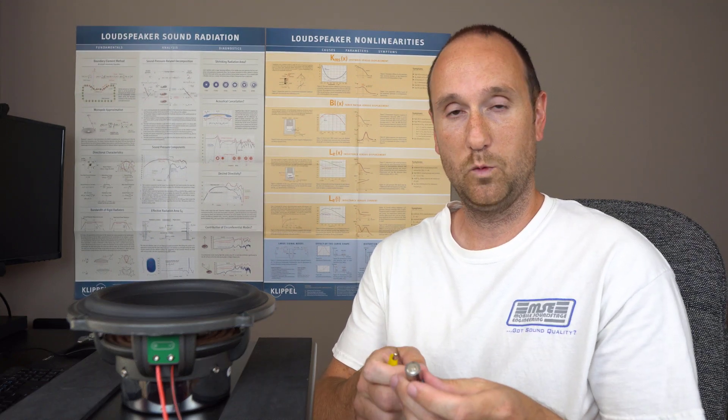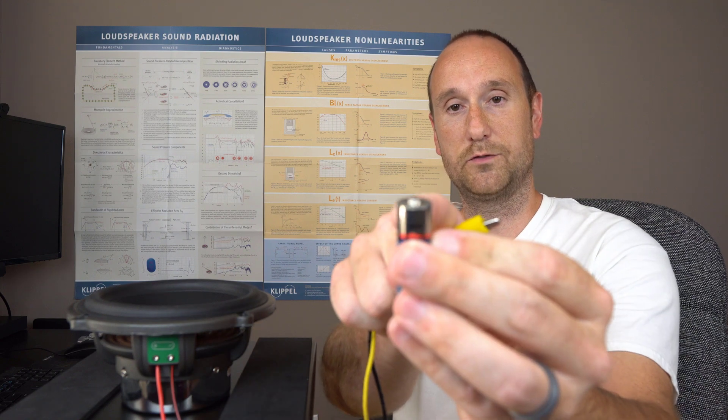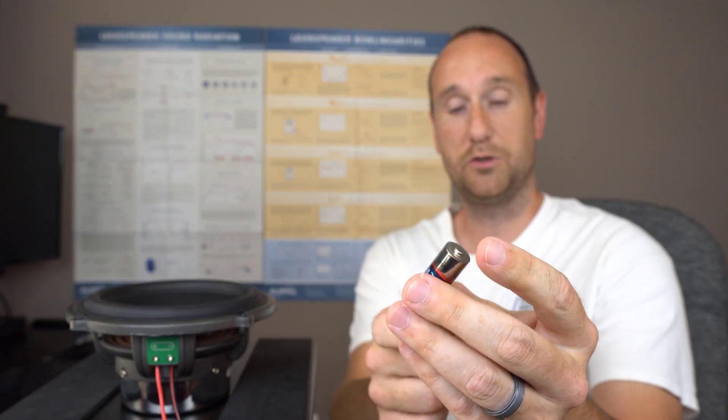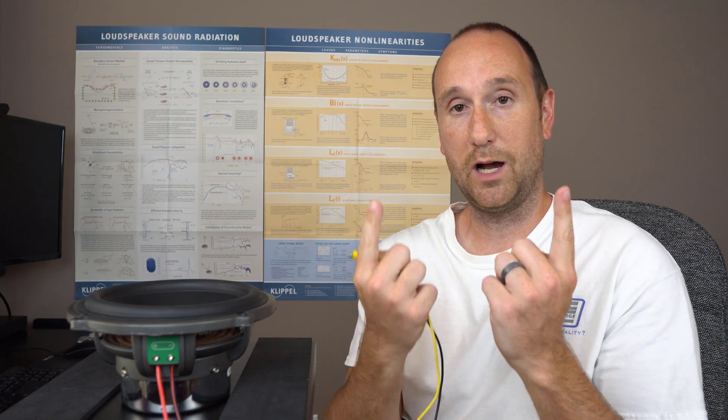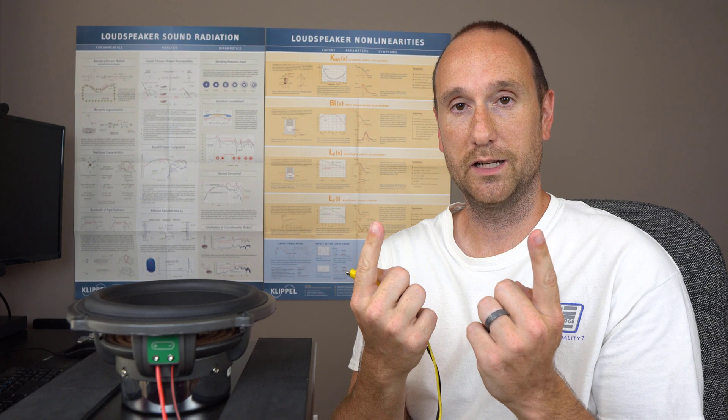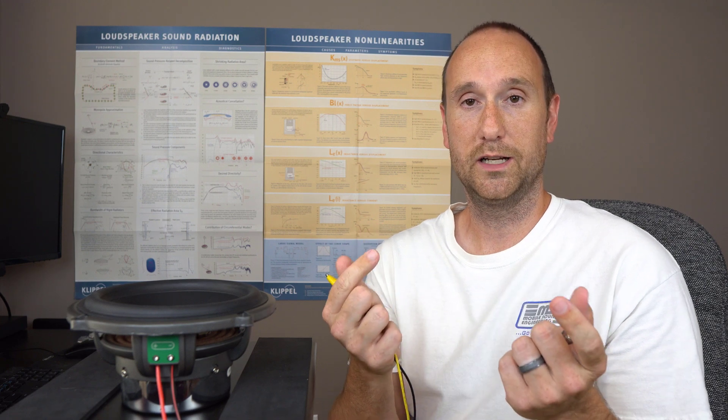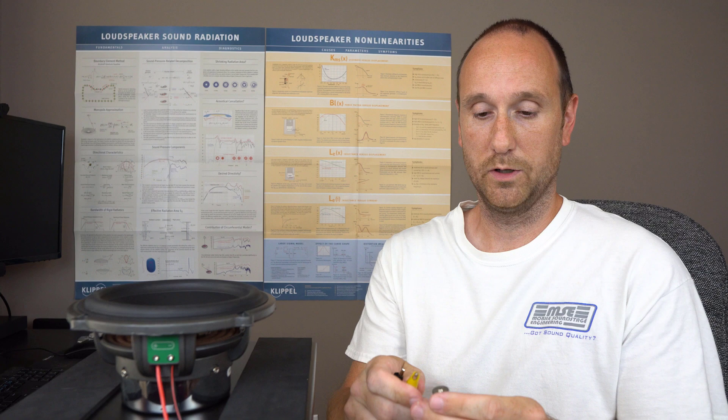Now, you wanna connect whatever end you think is positive to the positive terminal on the battery, and whatever end you think is negative to the negative terminal on the battery. That way, if your assumption plays out, the speaker should move outward if it's in the proper polarity. And if it's in the wrong polarity, then it'll move inward. So, let's go forward.